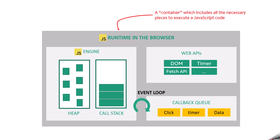You can consider a runtime environment as a container which includes all the necessary pieces to execute a JavaScript code. A JavaScript runtime environment for the browsers consists of a JavaScript engine, web APIs, callback queue, and event loops.